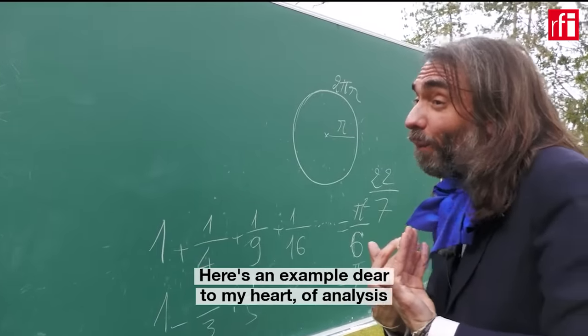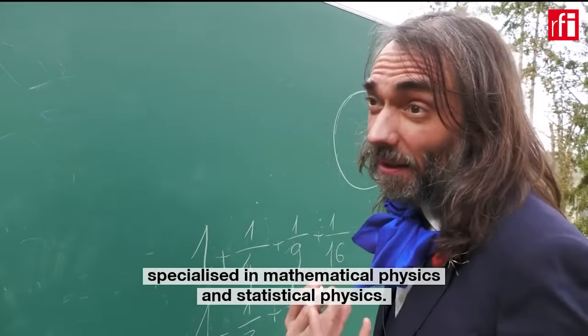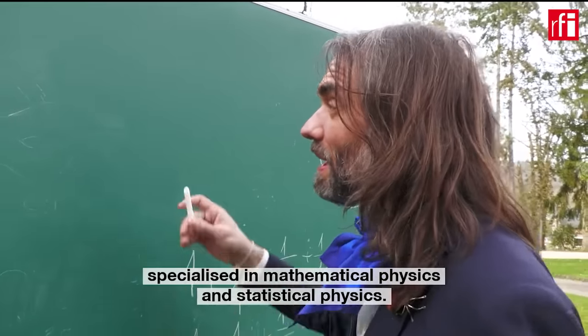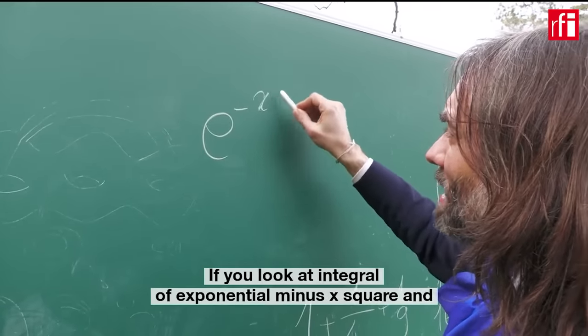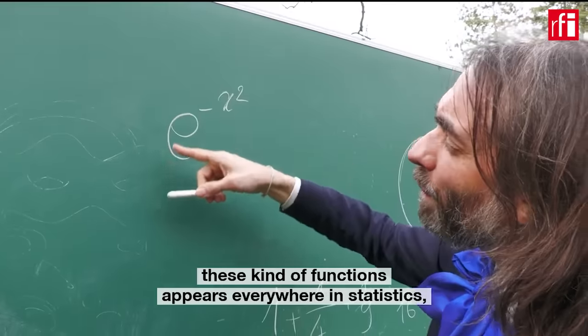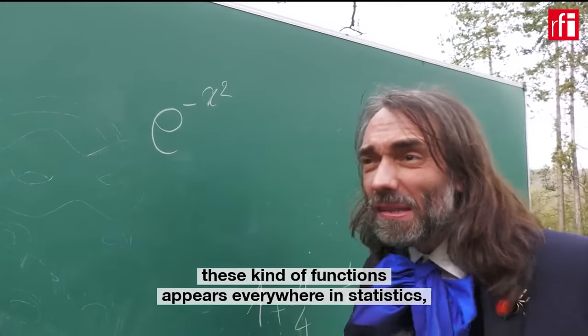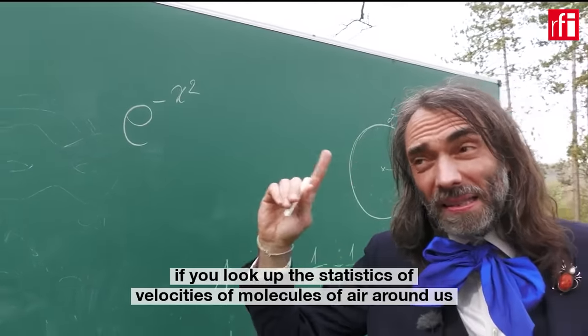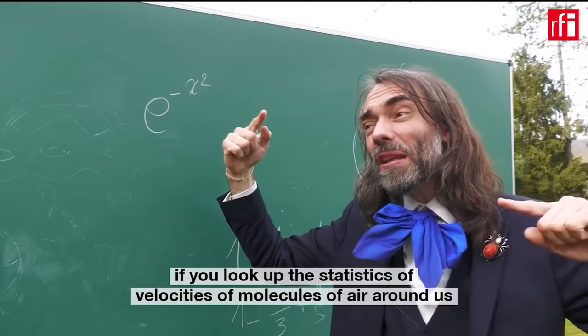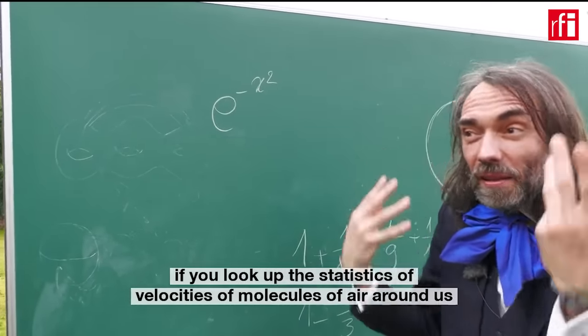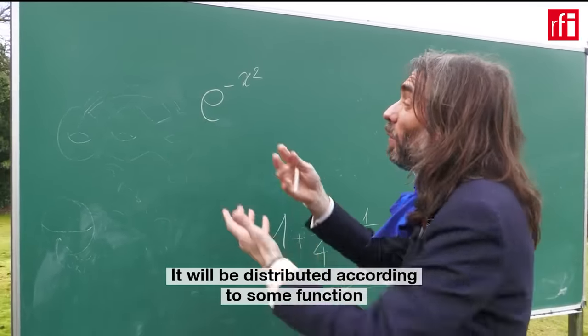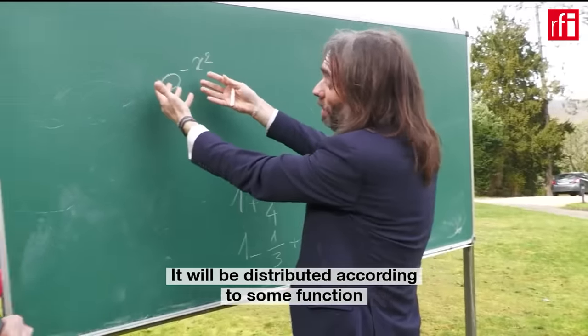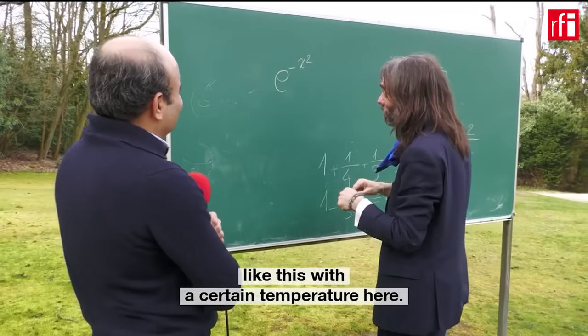Here's an example dear to my heart of analysts specialized in mathematical physics and statistical physics. If you look at integral of exponential minus x squared, these kinds of functions appear everywhere in statistics. If you look up the statistics of velocities of molecules of air around us, we look at their velocity profile. It will be distributed according to some function like this with a certain temperature here.